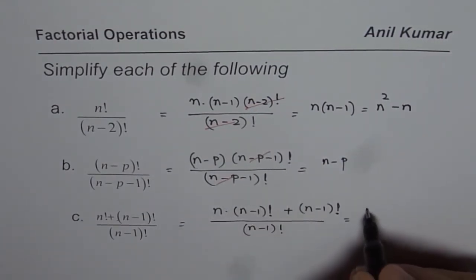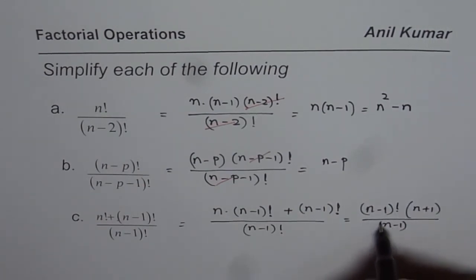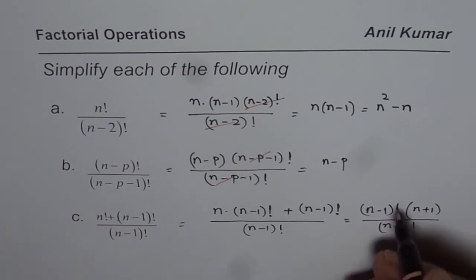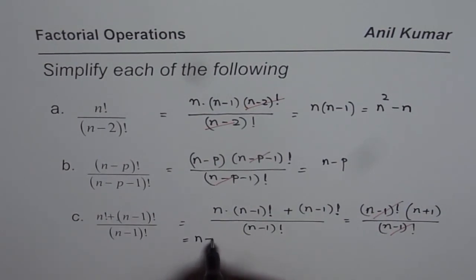n minus 1 factorial is common. You are left with n plus 1 times n minus 1 factorial divided by n minus 1 factorial. They cancel out and you are left with n plus 1. So the result is n plus 1.